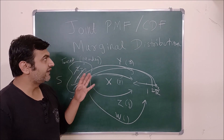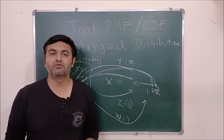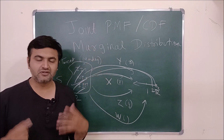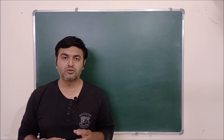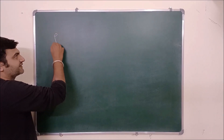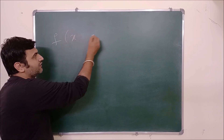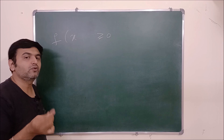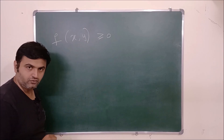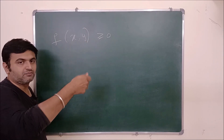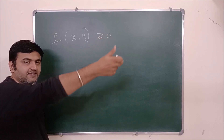Let me now define joint PMF — joint probability mass function — specifically for discrete random variables. Recall that for one variable, the first condition was f(x) ≥ 0. For two random variables, the first condition becomes f(x, y) ≥ 0. For three variables, f(x, y, z) ≥ 0. For n variables, f(x₁, x₂, ..., xₙ) ≥ 0. Most books cover two random variables, but things generalize to n variables on the same sample space.